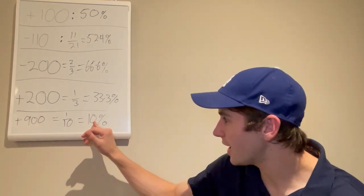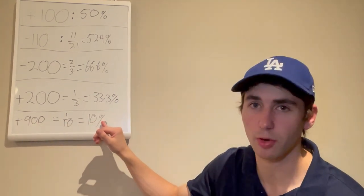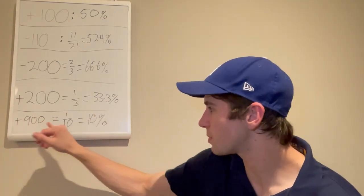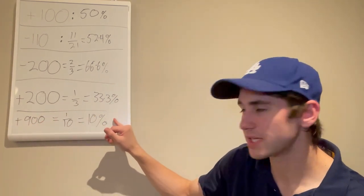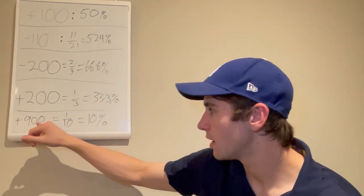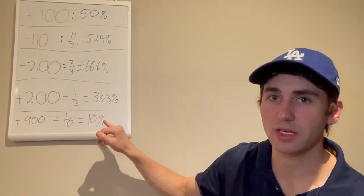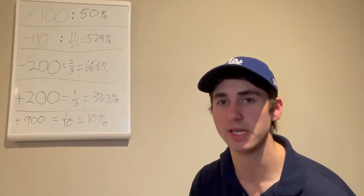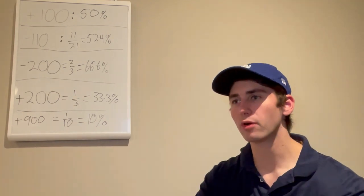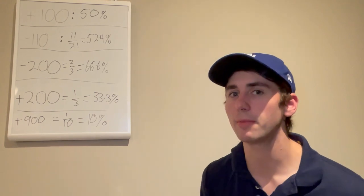If you're winning plus 900s 12.5% of the time, you are a mathematically profitable sports bettor. It's all about finding odds that you are getting on sports books where your actual win percentage is greater than the implied win percentage from the odds. I personally would bet any plus 900 that I thought was 11%, 12%, 14%, or 15% to win, because even though it's most likely going to lose, I have a mathematical edge over the sports books, and in the long run it's going to make me money.